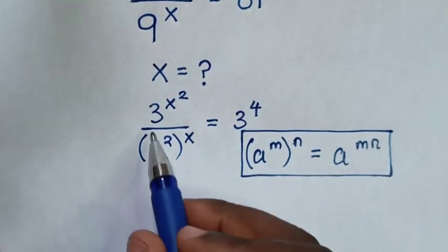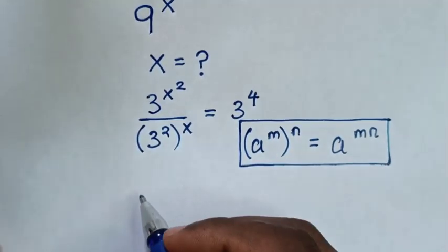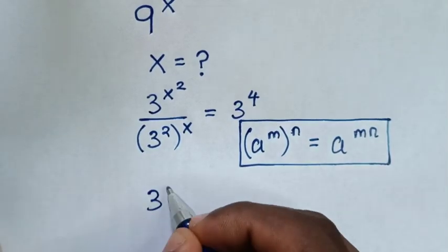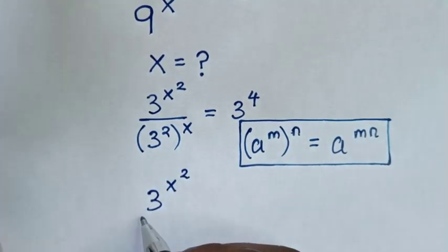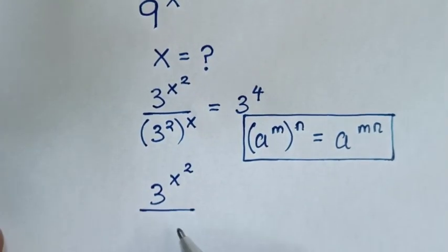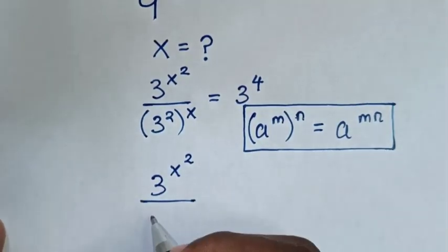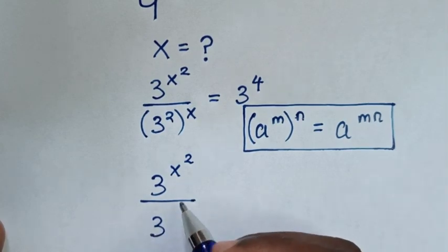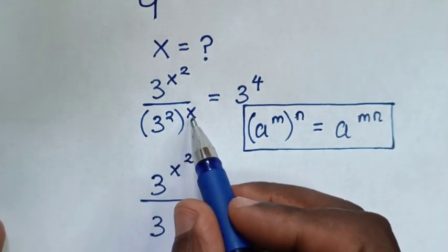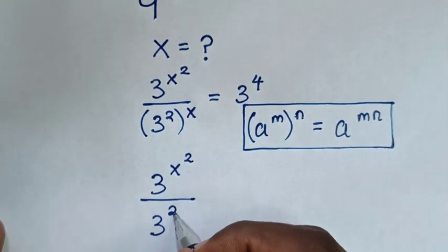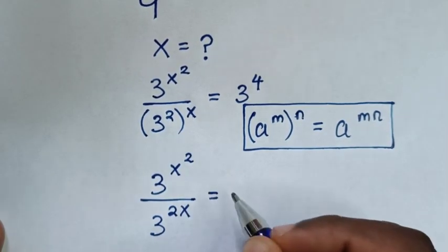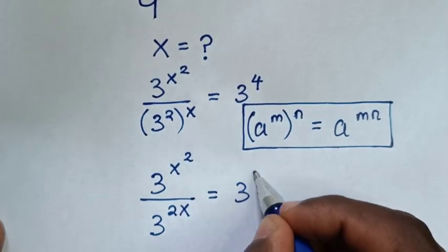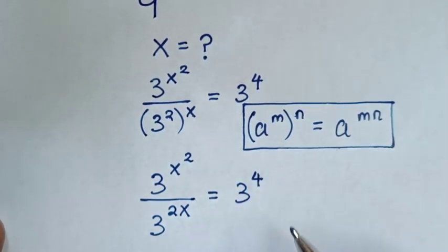So our equation will be 3 power of x square, over 3 power of 2 times x, is equal to 3 power of 4.